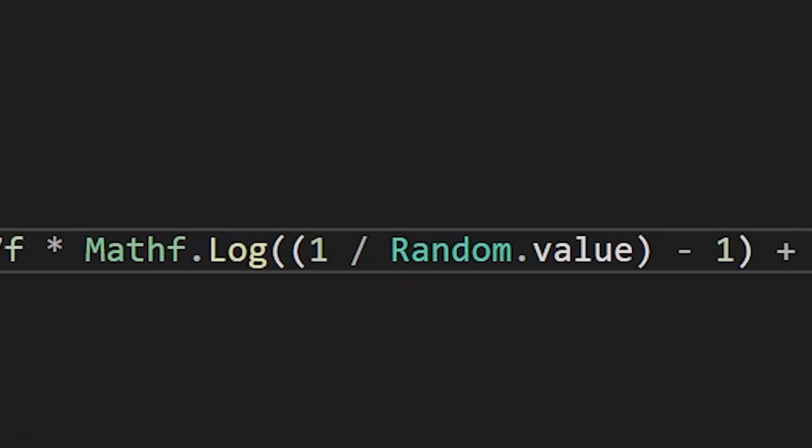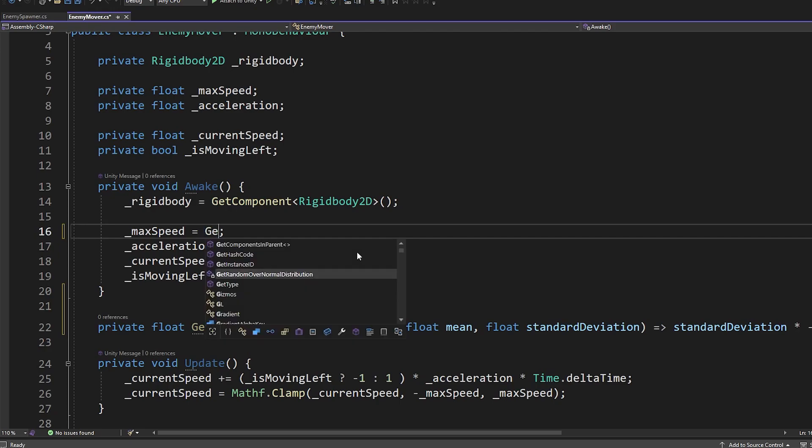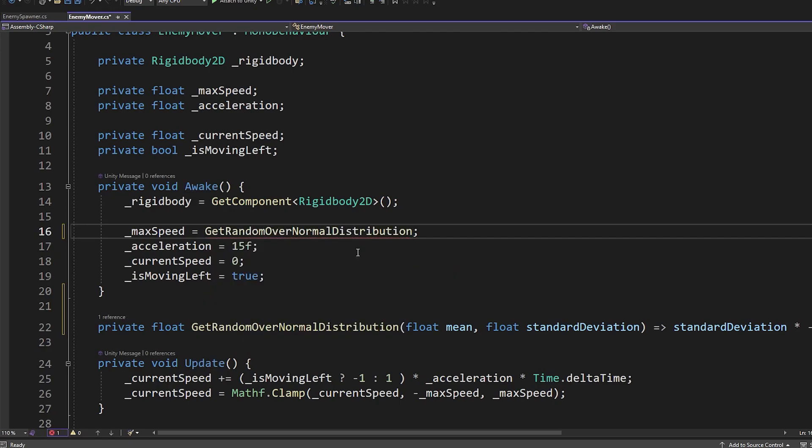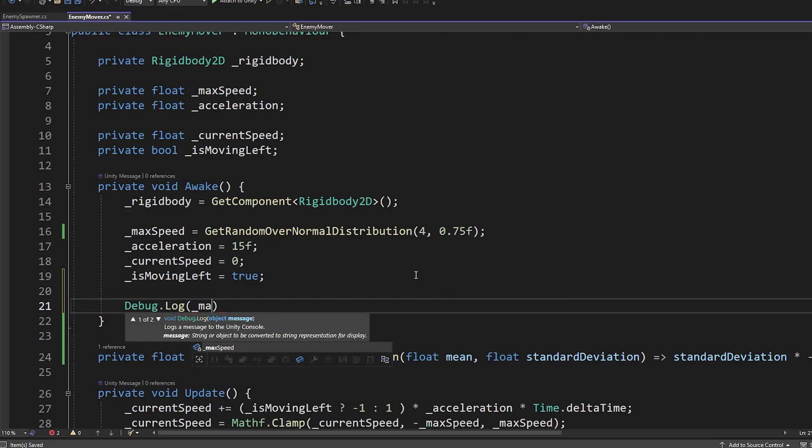I believe mathf and random.value are Unity-only things, but it can be easily translated using doubles with system.math and system.random. Now, all we have to do is replace the current assignment to 4 in max speed to call get random over normal distribution, with 4 passed in as our mean and 0.75 passed in as our standard deviation. I'll also log our speed into the console, so we don't have to guess how fast they're going with our eyes.